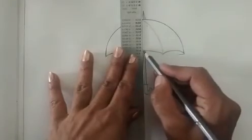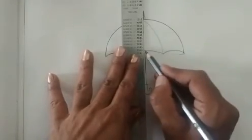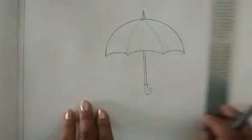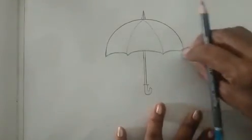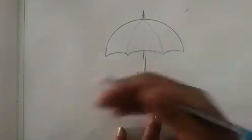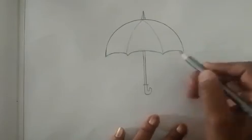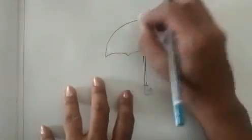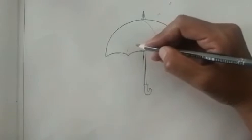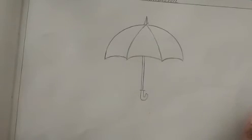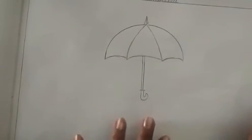And we will join this line here. So we will draw a half circle like this and umbrella.